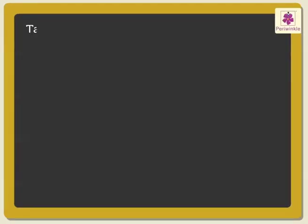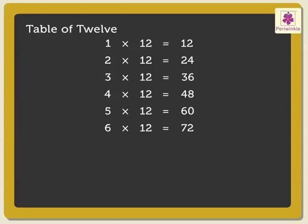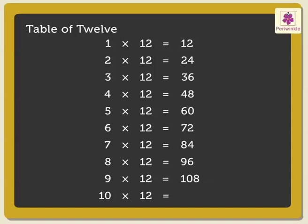Next is the table of 12: 1×12 is 12, 2×12s are 24, 3×12s are 36, 4×12s are 48, 5×12s are 60, 6×12s are 72, 7×12s are 84, 8×12s are 96, 9×12s are 108, 10×12s are 120.